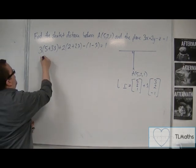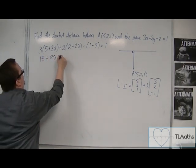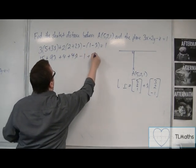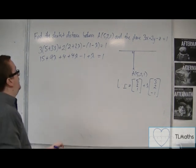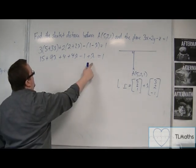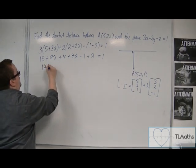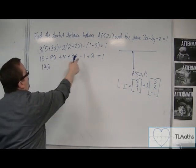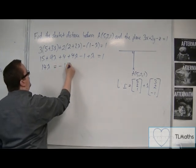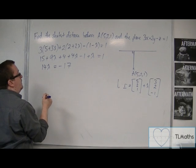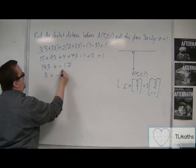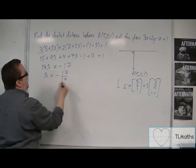Expanding the brackets: 15 + 9λ + 4 + 4λ − 1 + λ = 1. Collecting the λ terms gives 14λ, and the constants give 18. Taking 18 from both sides gives −17 on the right-hand side. Dividing both sides by 14, λ = −17/14.